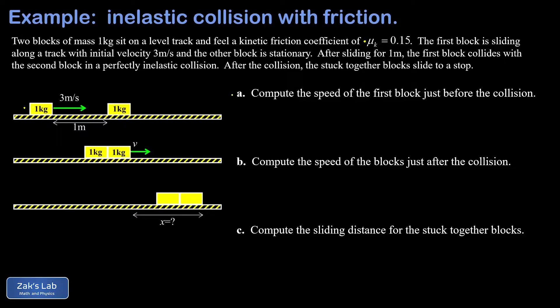So in part A, we have to figure out what's the speed just before the impact. In part B, we're going to apply conservation of momentum to figure out the speed of the stuck together blocks after the impact. And then in part C, after those blocks are stuck together, they're going to slow down as friction continues to work on them, and eventually they're going to come to a stop. And we're trying to figure out how far do they slide after they're stuck together.